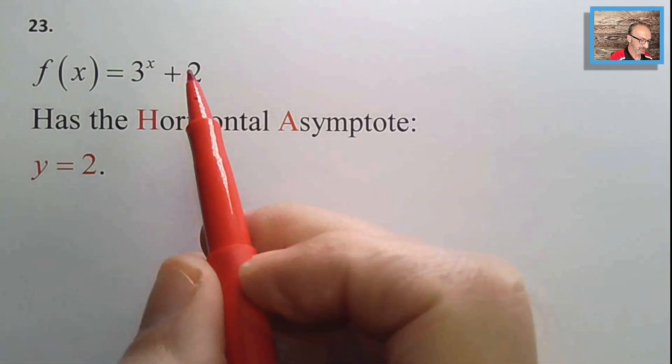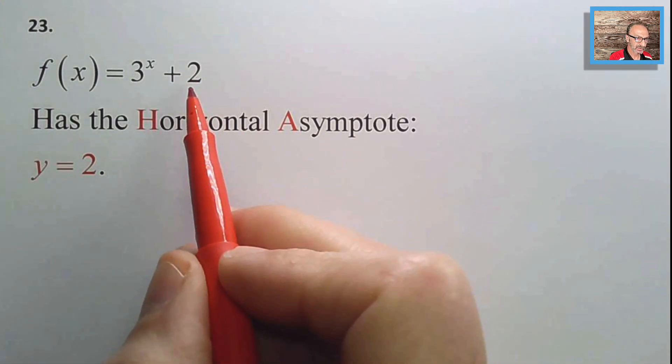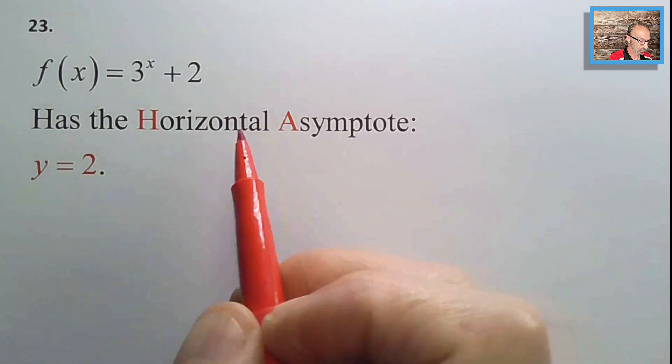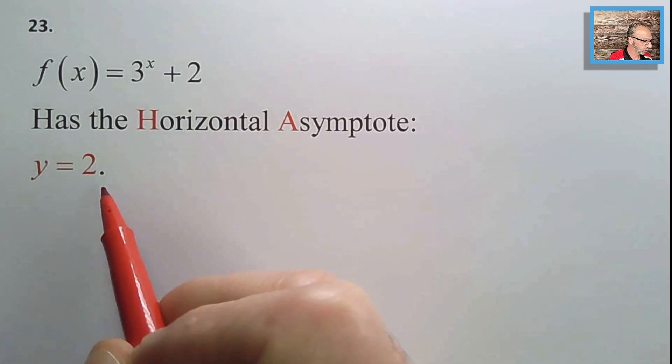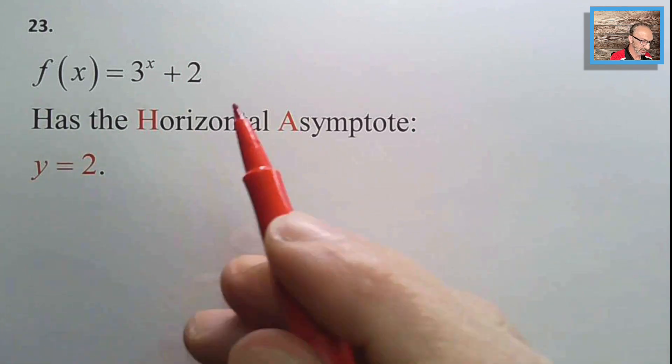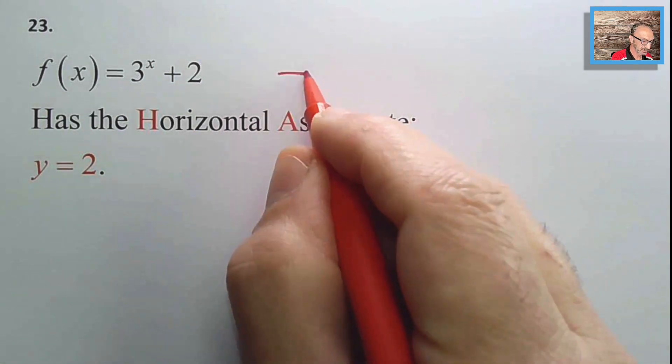Number twenty-two: the graph has a horizontal asymptote at y = 0 — the x-axis. This is true for an exponential function with no vertical shift.